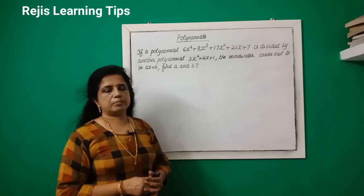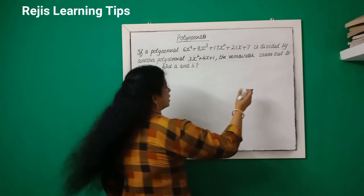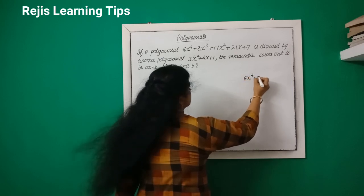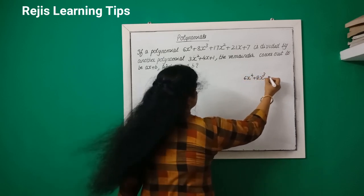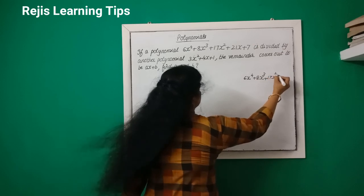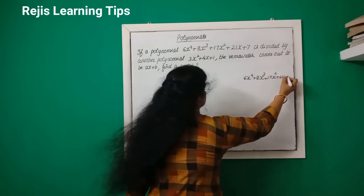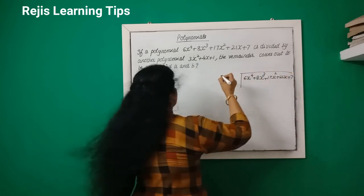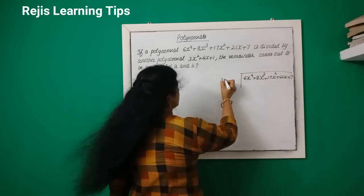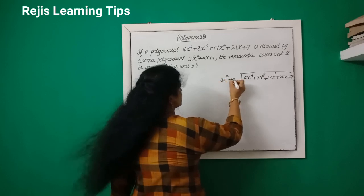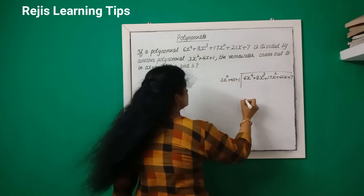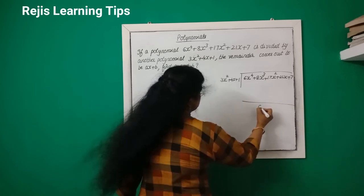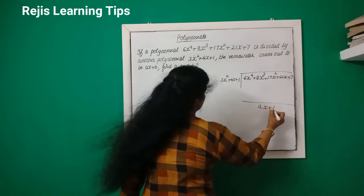Find a and b. We are going to divide the polynomial 6x⁴ + 8x³ + 17x² + 21x + 7 by 3x² + 4x + 1, and we will find the remainder in the form ax + b.